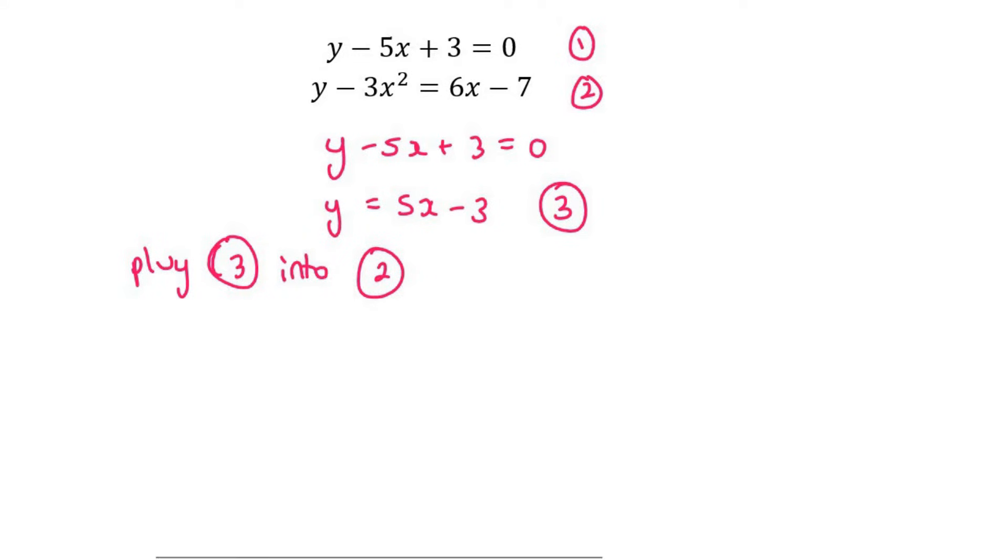So what does this actually mean? You're going to take this expression, which says that y is equal to 5x minus 3, and you're going to replace all the y's with that. So it's going to now look like this: 5x minus 3 minus 3x squared equals 6x minus 7. Can you see what we've done? Let's go through this slowly together so you understand.